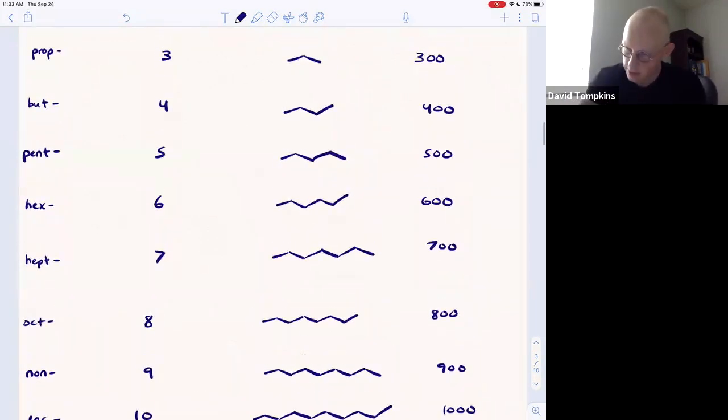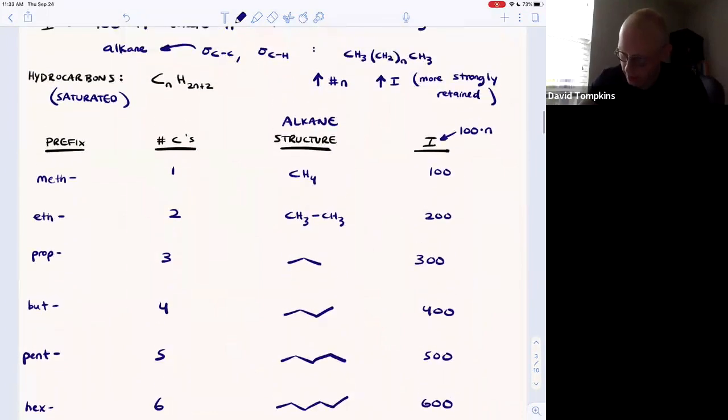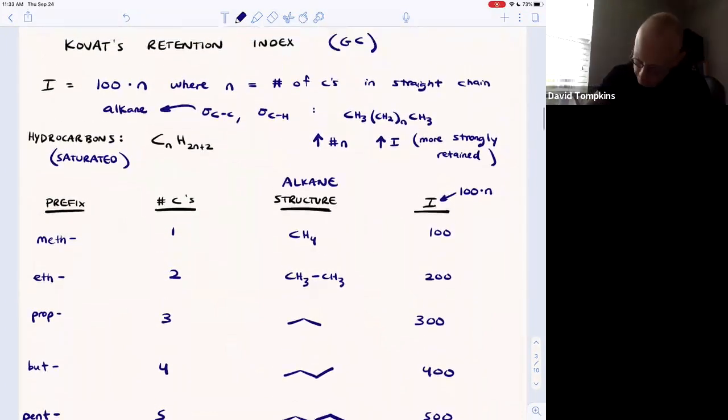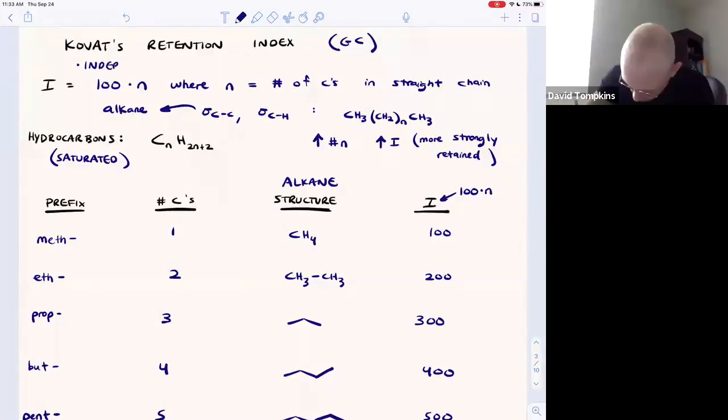These Kovats index values are independent of stationary phase for simple linear straight chain hydrocarbons. Doesn't matter what the stationary phase is, this is a defined value.